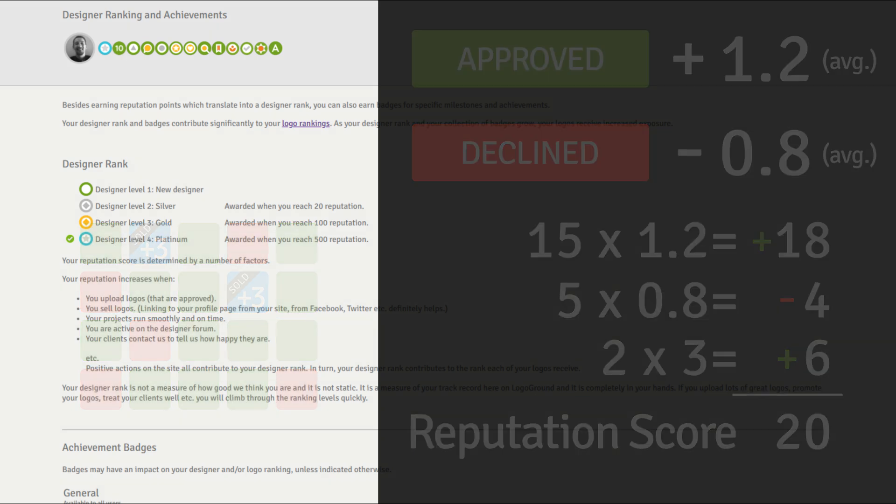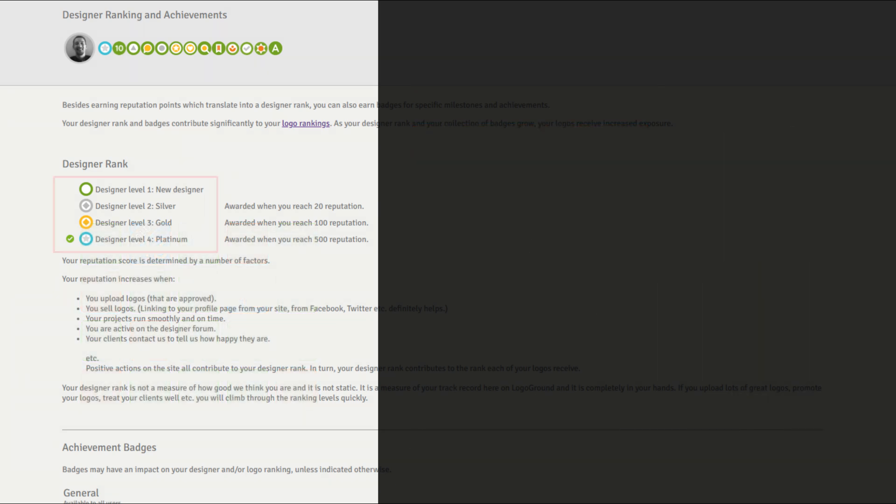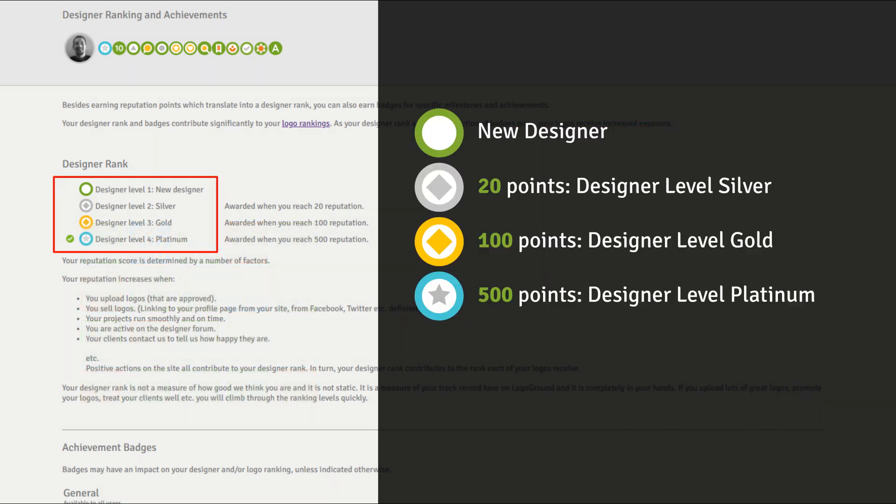And that is awesome news. 20 points means you've reached the silver designer level, and it's the same for the other levels. When you get to 100 points you move up to gold, and at 500 you move up to platinum.